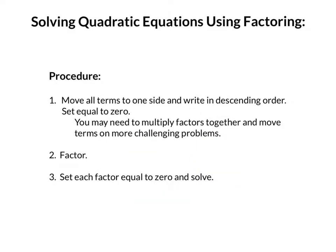Now that we've looked at our base case example, let's talk about solving quadratic equations using factoring in general. The first thing we want to do is move all terms to one side and write in descending order — one side of the equation should equal zero. Note: you may need to multiply factors together and move terms on more challenging problems. Second, we factor. Finally, we set each factor equal to zero and solve.